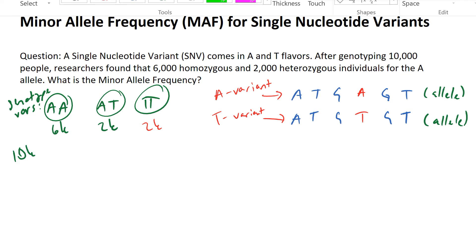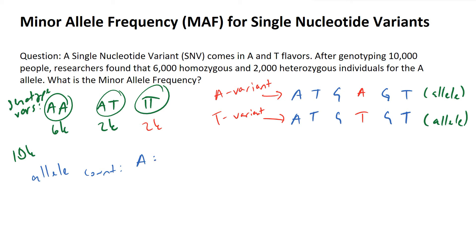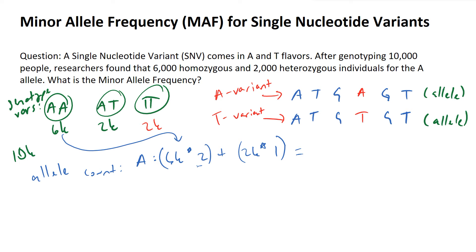Now we can count the number of alleles. For the A allele, we have 6,000 times 2 — coming from the homozygous AA individuals — plus 2,000 times 1 from the heterozygous individuals. The reason for multiplying by 2 is that a homozygous pair has two copies. So 6,000 times 2 is 12,000, plus 2,000, gives us 14,000 A alleles in this population of 10,000 people.